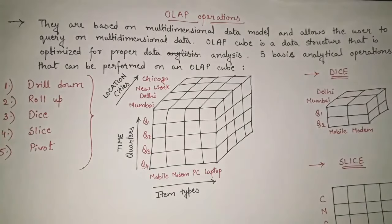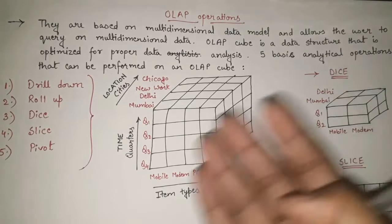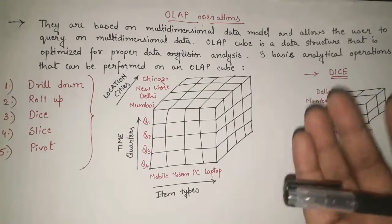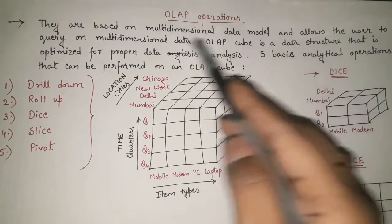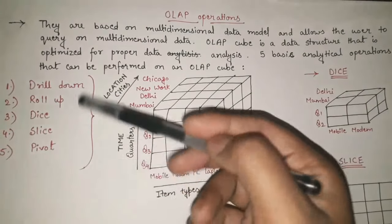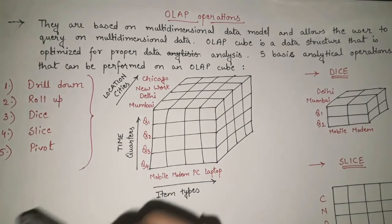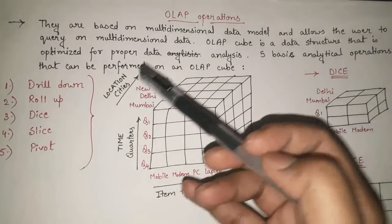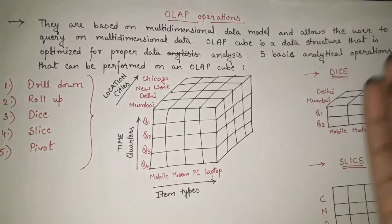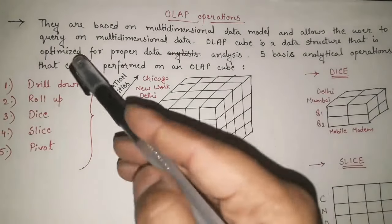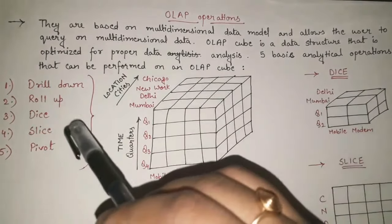That is OLAP operations. In my previous video we have already seen in detail what we mean by OLAP, what is OLTP, the basic differences between them and what they actually do. Now in today's video we are going to see what these OLAP operations are all about and why they are needed. We will see these five OLAP operations in detail with complete figures and examples. OLAP operations are based on a multi-dimensional data model and allow the user to query on multi-dimensional data.